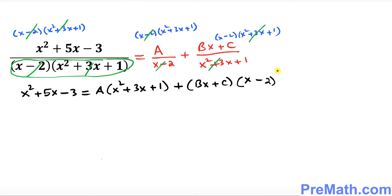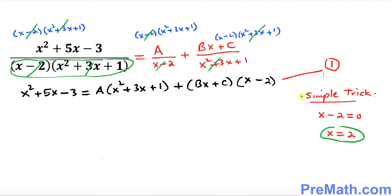This is the equation we obtained — we'll call it equation number one. To find the values of A, B, and C, we'll use a simple trick. Looking at the denominator, we have a linear factor (x minus 2). We set that linear factor equal to zero, giving us x equals 2.